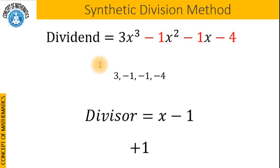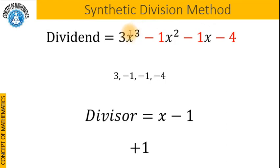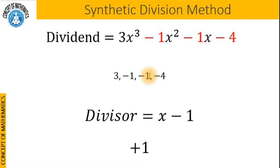The next step is to remove all variables with their exponents. Suppose the dividend is 3x cubed minus x squared minus x minus 4 and the divisor is x minus 1. We will remove all variables with their exponents from the dividend and write down the coefficients in a line: remove x cubed and write 3, remove x squared and write negative 1, and of course negative 4 will be written here as well.